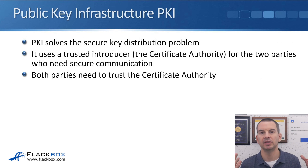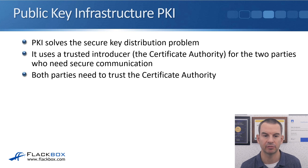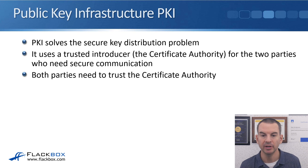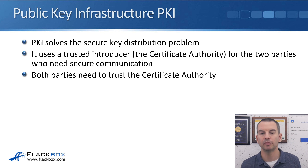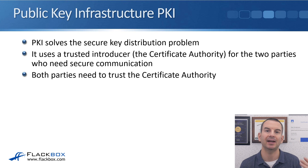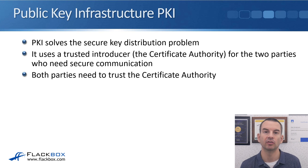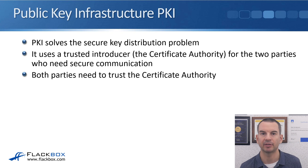The solution to the key distribution problem is PKI — public key infrastructure. PKI uses a trusted introducer, which is the certificate authority, for the two parties who need secure communication. Both parties need to trust the certificate authority, and it acts as a go-between which allows them to share a symmetric key securely. I'll show you how the process works in the next lecture.